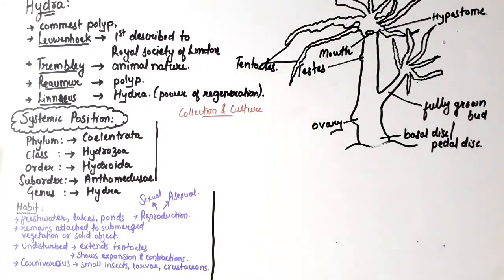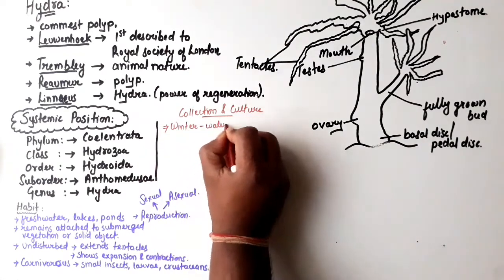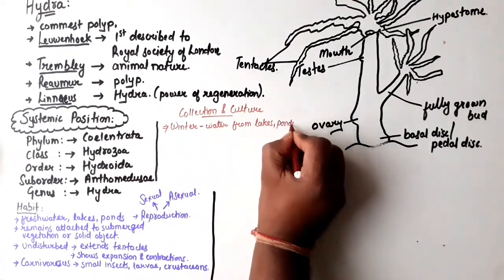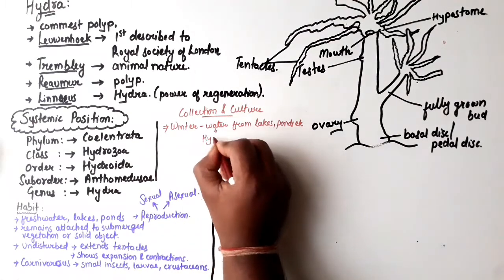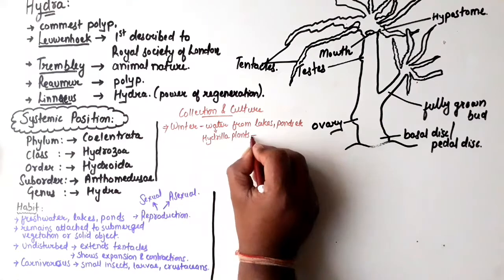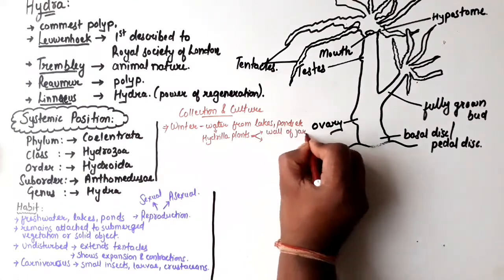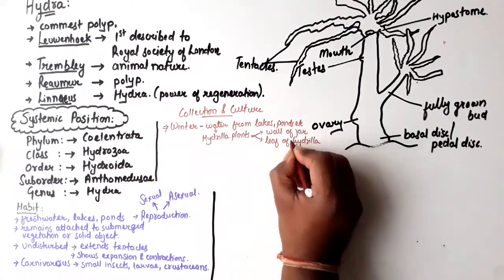Now let us understand the collection and culture of Hydra for laboratory purposes. Hydra can be collected in winter from freshwater lakes or ponds. If we collect a jar of water with hydra plants and leave it undisturbed for a day or two, we may notice several hydra attached to the jar wall or plant leaves.